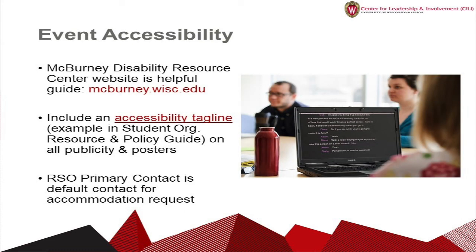It is important that as your organization plans events, meetings, and programs on campus, you find ways to make these accessible to all students. There is a handout on the McBurney Disability Resource Center website that can assist in providing guidance on how to plan an accessible event. We highly recommend that you include an accessibility tagline on advance publicity so students can request accommodations — this tagline should include who students could contact, such as for a large print agenda or interpreter services. The primary contact is by default the contact person for accommodation requests, so please be prepared for students to reach out.